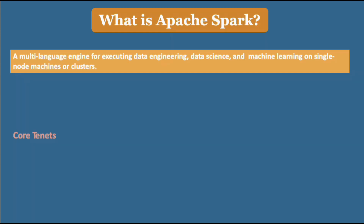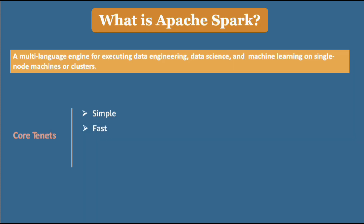Let us look at some of the core design principles or tenets on which Spark is built. The first one is simplicity — leveraging Spark functionality for developers in their workflows has to be very simple in terms of API and naming conventions. It also has to be fast with respect to executing queries, processing machine learning or data analytics workloads. Various tasks have to run very fast. Then it has to be scalable.